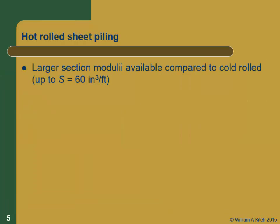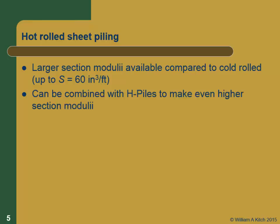Hot rolling produces much bigger, much heavier sections. You can get section moduli up to 60 inches cubed per foot. There are actually hybrid piles where people will combine a sheet pile with a pipe pile, or weld a small H section to it to get an even stiffer section modulus. You can also combine with an H pile to get an even stiffer section.